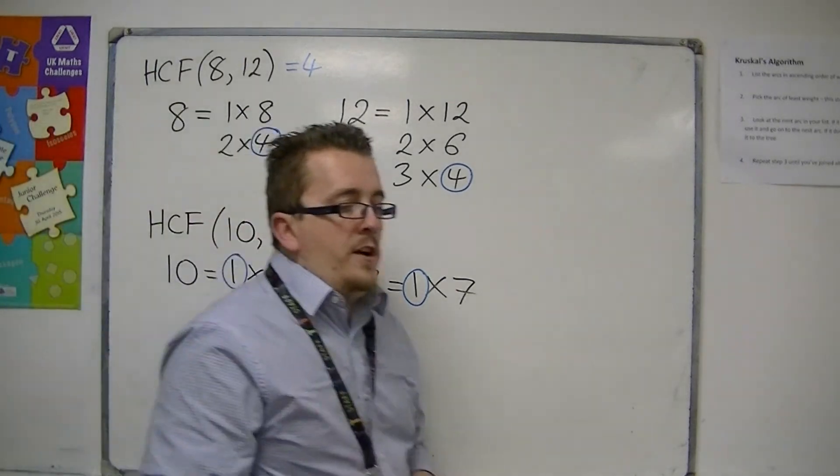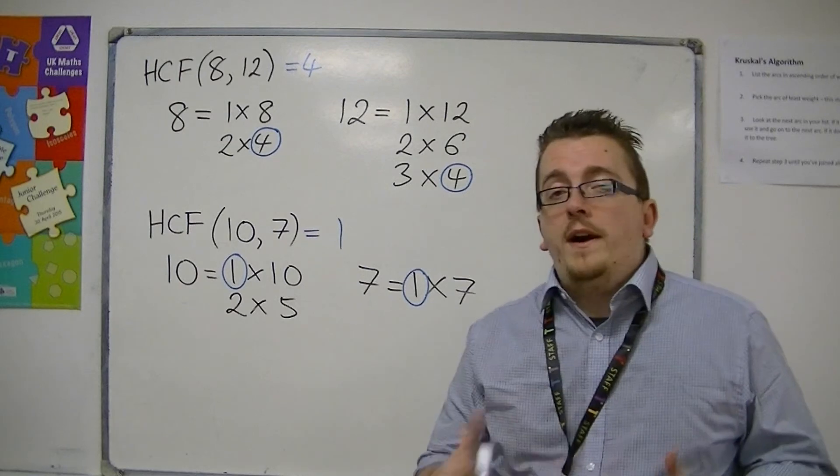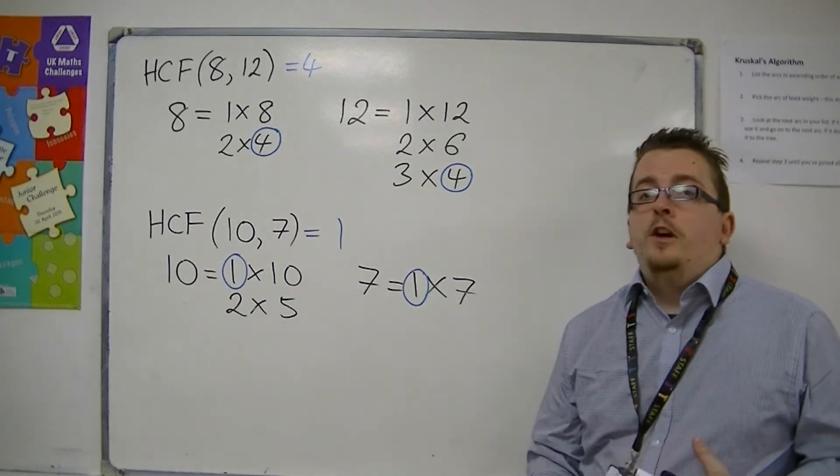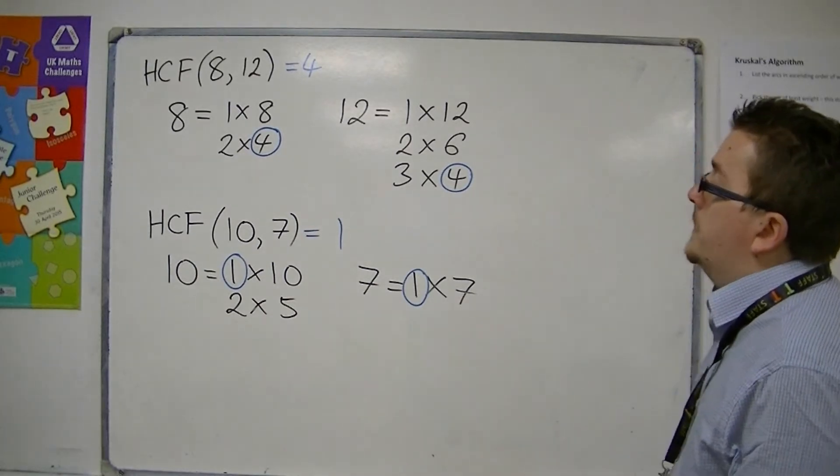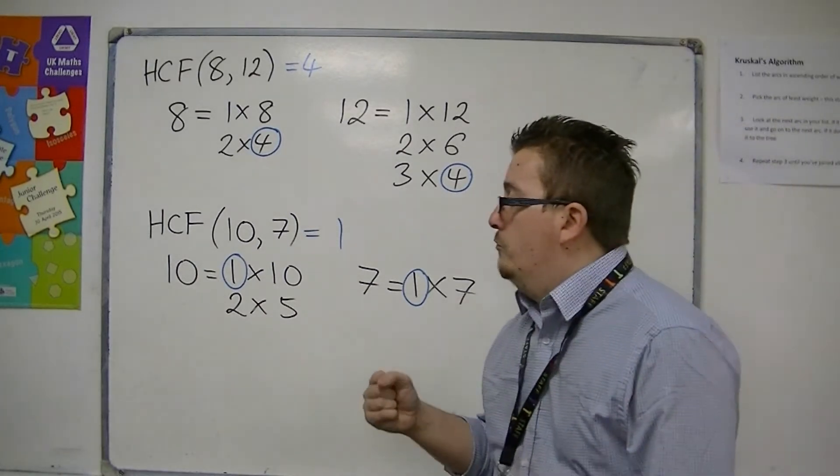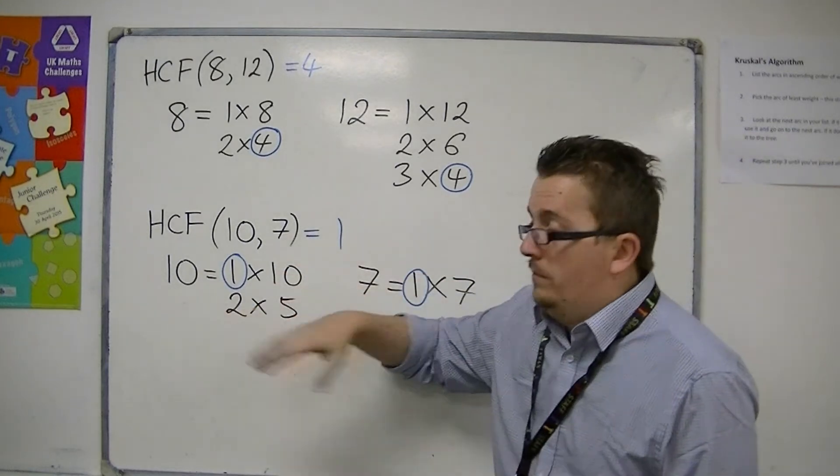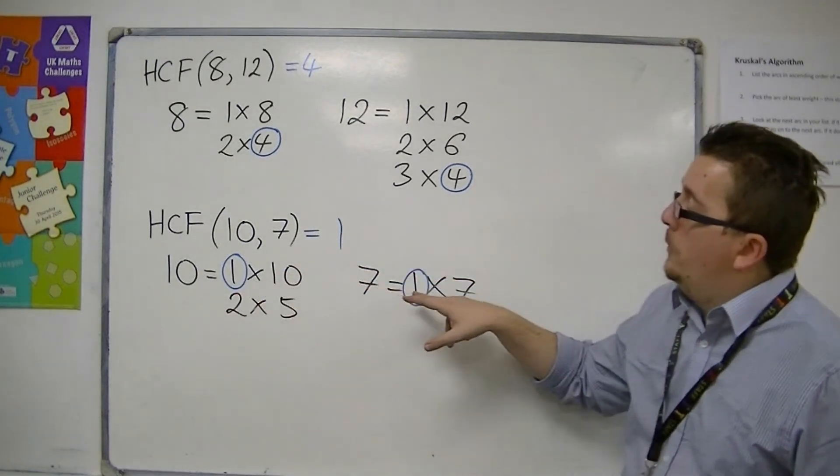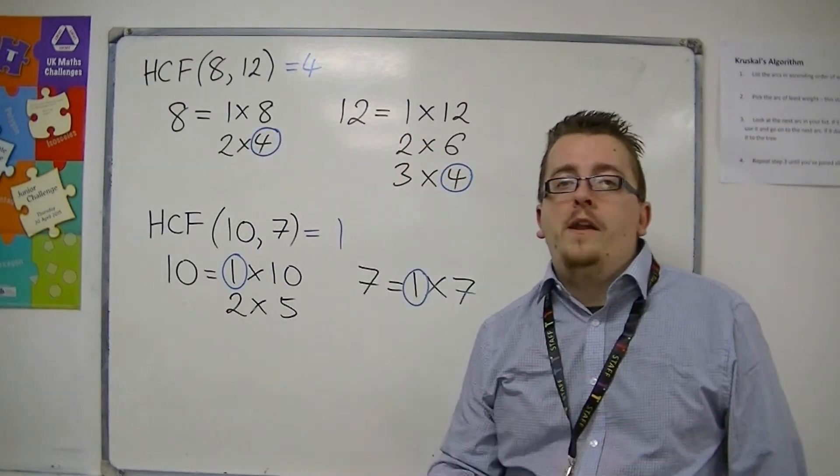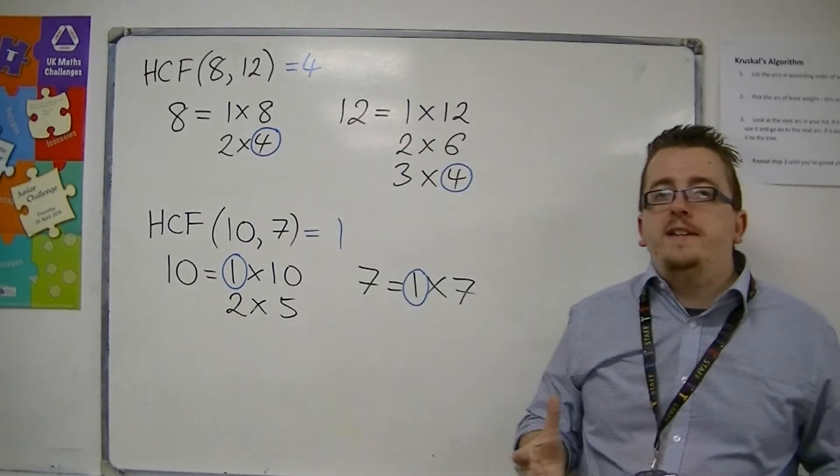Why do we never look for the lowest common factor? Because it would always be 1, no matter which two numbers I write down.